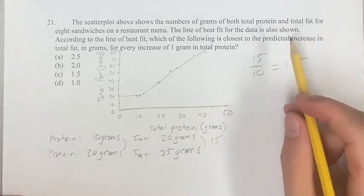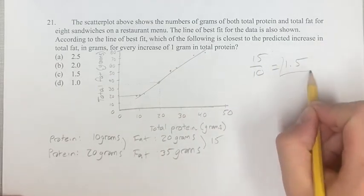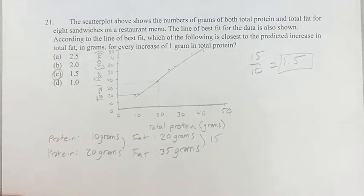So what is the predicted increase in fat for every increase in protein? 1.5, c is going to be your final answer. As always, thank you for liking and subscribing and I'll see you in the next video.